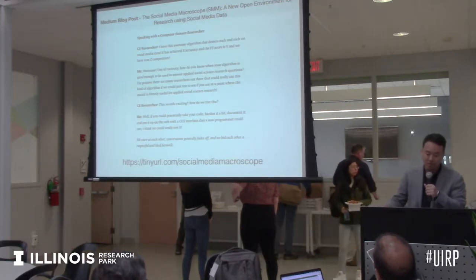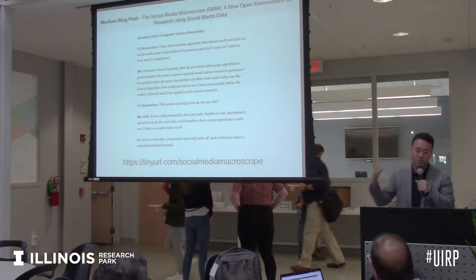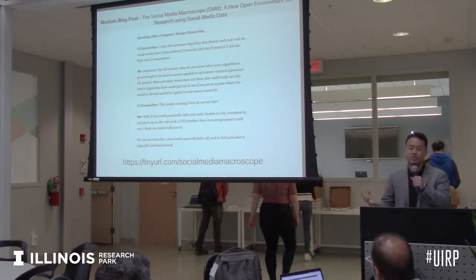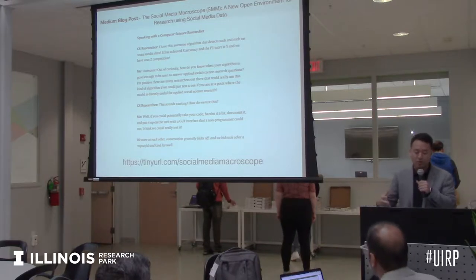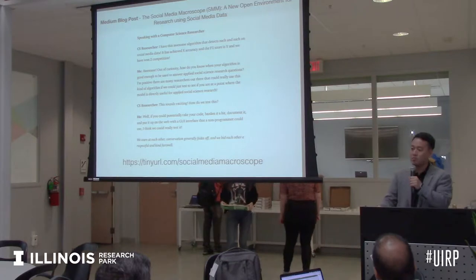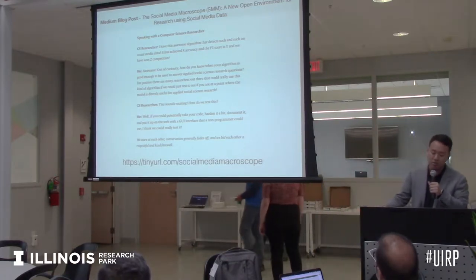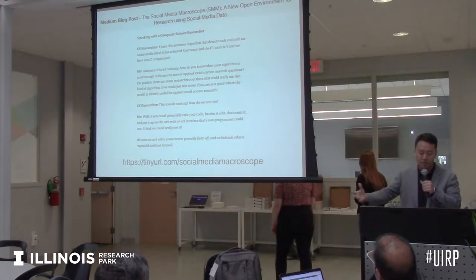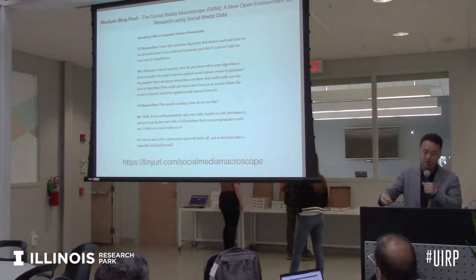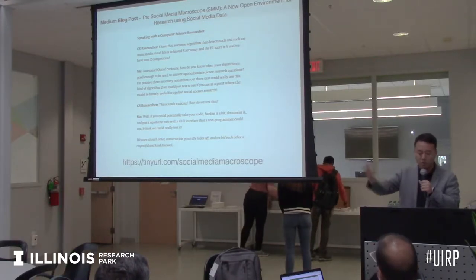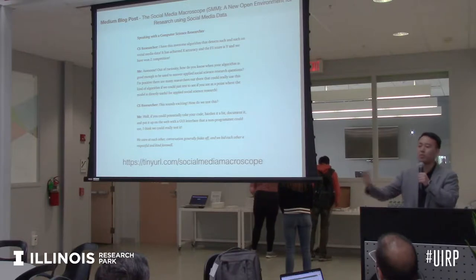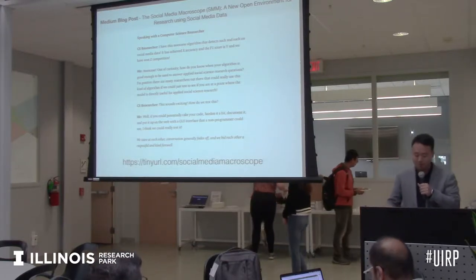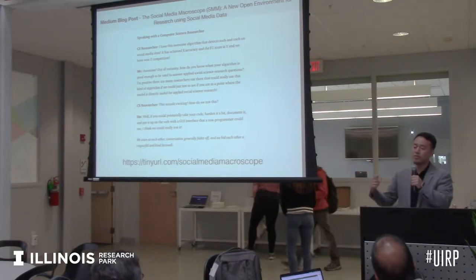Then another day I'd be on the north side of campus speaking with a CS researcher, and they'd say, 'I have this amazing algorithm that detects such-and-such on social media data. It has X accuracy, F1 score is Y, and it won Z competition.' And I'd say, 'Awesome, but how do you know when this algorithm is good enough to answer applied social science research questions?' The researcher would say, 'I don't know, but this sounds exciting—how do we test this?' And I'd say, 'Well, you could take your code, harden it, document it, put it up on a website with a GUI interface that a non-programmer could use.' Smile, conversation fades off, farewell. I'd have these conversations over and over again.